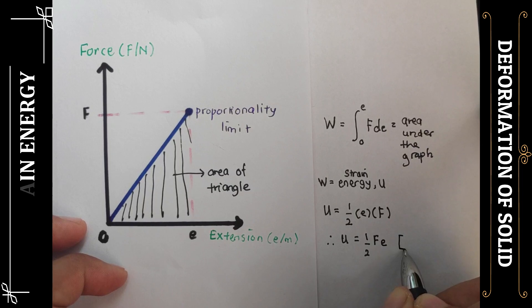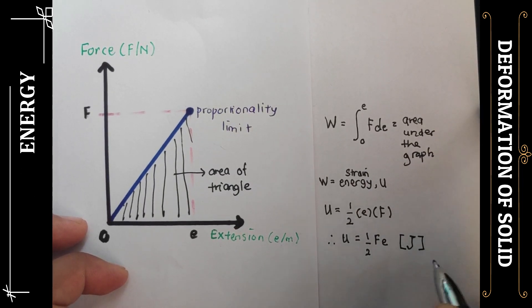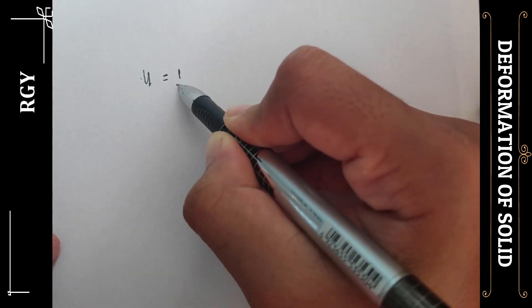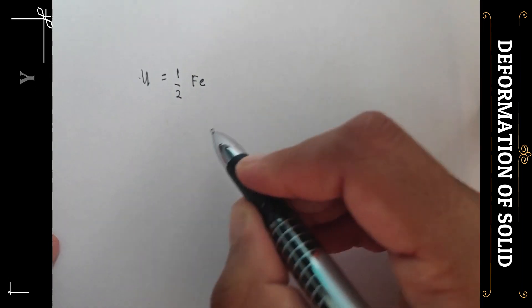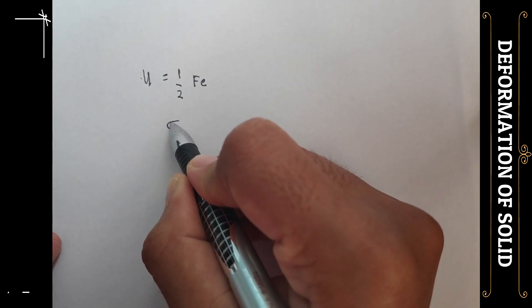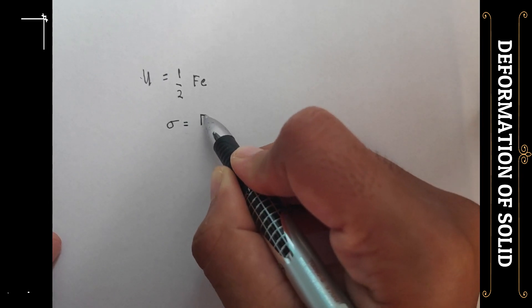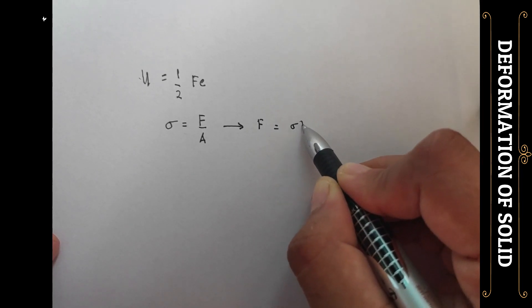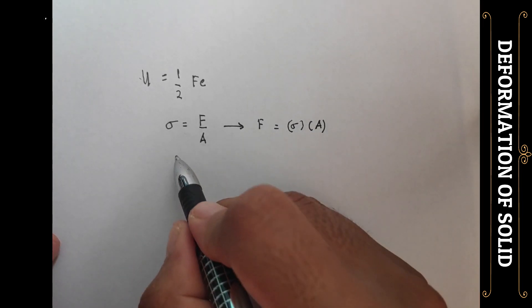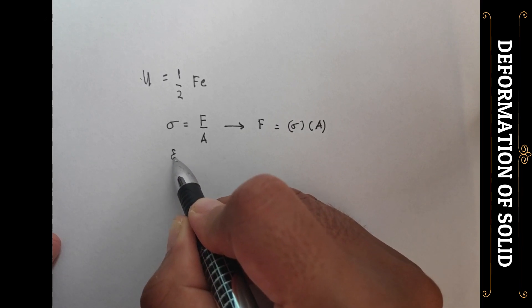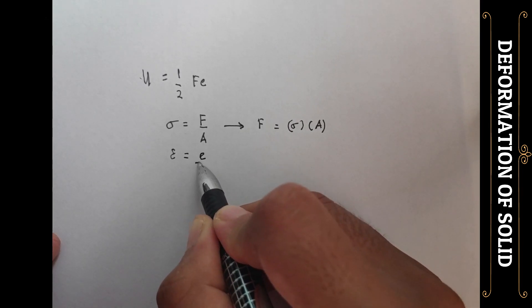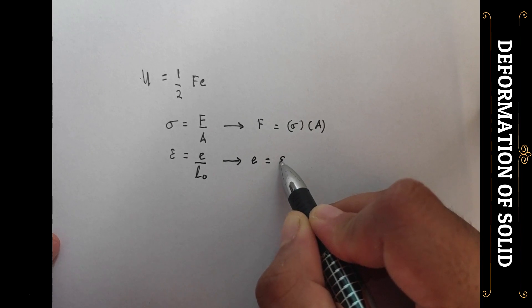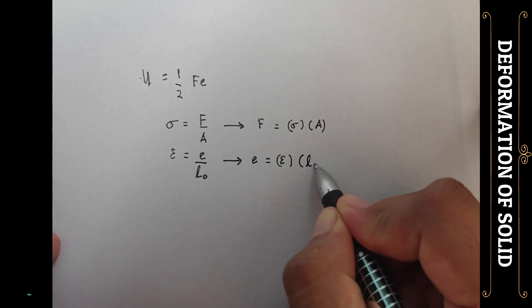U is in the unit of joules. We know that U equals 1 over 2 F E. We have stress equals force over area. If we rearrange this, we can get F equals stress times area. And we have strain equals extension over original length L0. We can rearrange to get E equals strain times L0.